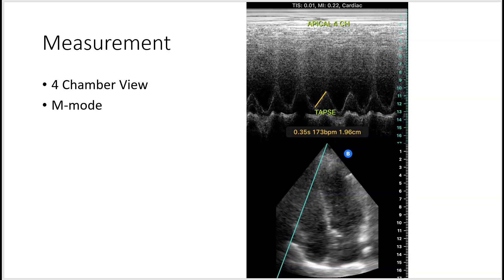To measure the TAPSE, you first put the echo in full chamber view, and then switch to M-mode. In M-mode, you align the line along the lateral wall of the right heart chamber walls, where the tricuspid annulus is. And then you'll get something like this.